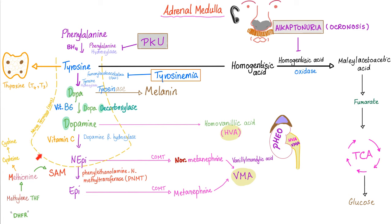But if you are a sympathetic postganglionic nerve ending, you can only release norepinephrine — never epinephrine, because you do not have the PNMT enzyme. The function of PNMT is to add a methyl group into the N position, transforming norepinephrine into the even more potent epinephrine. Where do you get the methyl group from? From the methyl donor SAM, which comes from the amino acid methionine, which came from methylene THF.